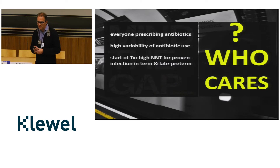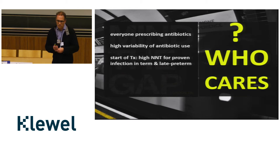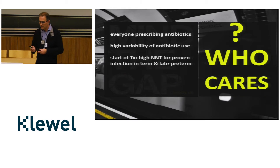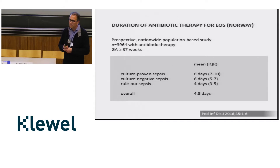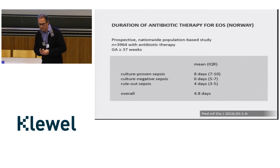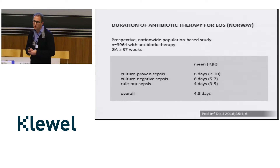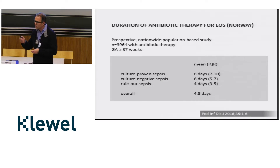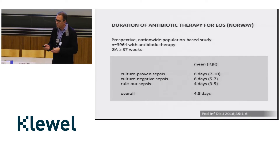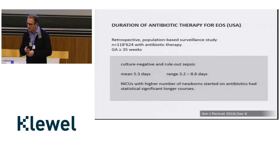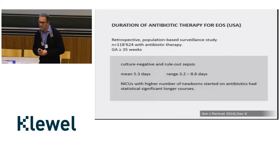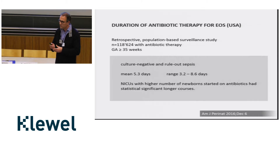We can conclude there is a high number needed to treat for proven infection in term and late preterm babies. Regarding duration of antibiotic therapy: in Norway, for culture-proven sepsis they treated 8 days, for culture-negative sepsis a mean of 6 days, for rule-out sepsis 4 days, giving an overall duration of 4.8 days. A US study of babies with culture-negative or rule-out sepsis had a mean duration of 5.3 days, with a range across NICUs of 3.2 to 8.6 days — a 2016 publication, not from the year 2000.